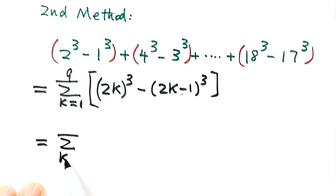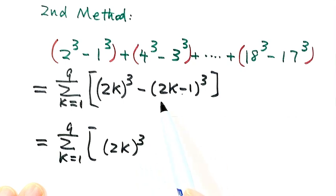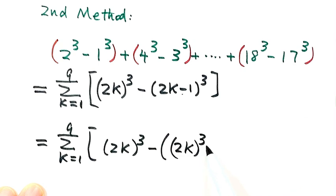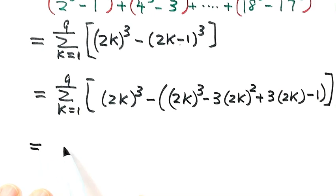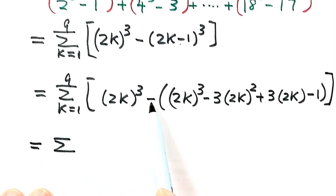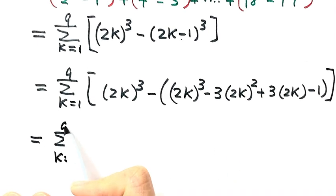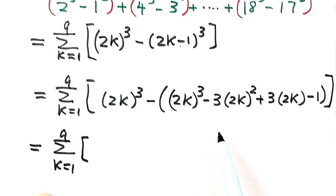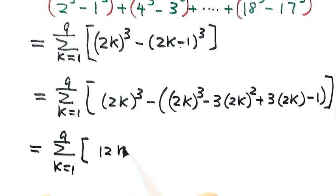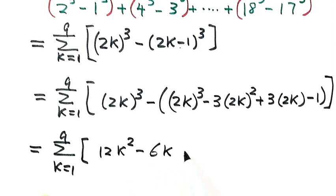Let's expand this expression. The first term is (2k)³. Using the binomial formula to expand (2k−1)³ gives: 2k³ minus 3×(2k)² plus 3×(2k) minus 1. Distributing the negative sign and subtracting, the 2k³ terms cancel, leaving 12k² minus 6k plus 1.